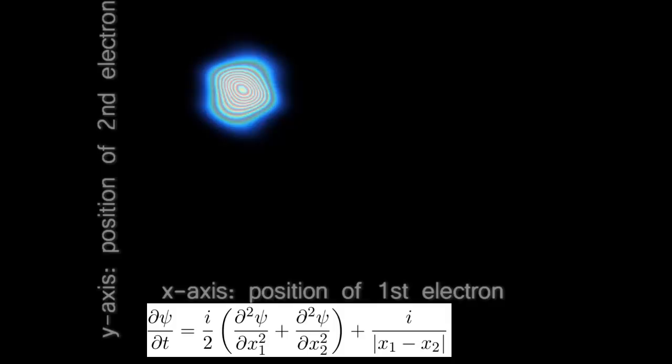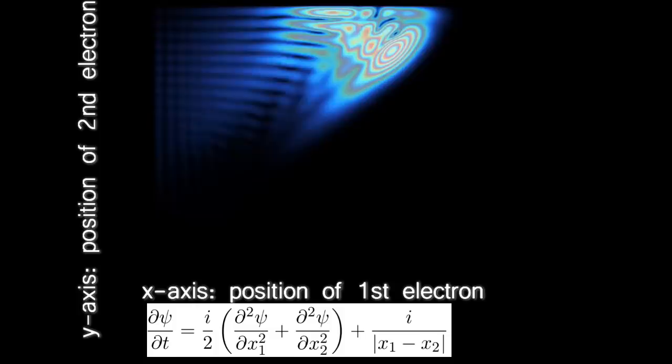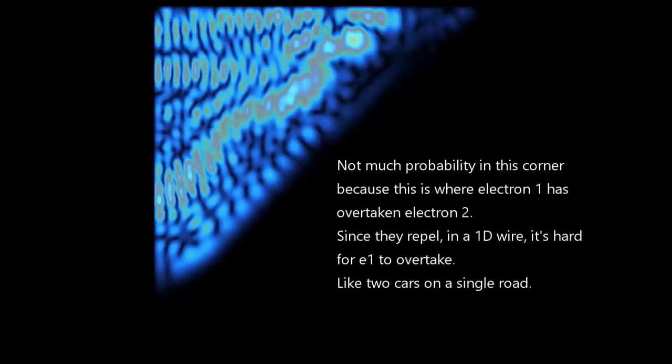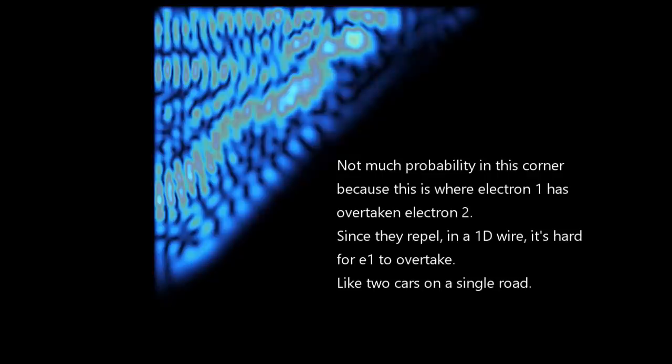Now we can write a Schrödinger equation for this situation too, and it looks like this. This equation, as before, tells us how the two electrons move, like this. Watch this a few times until you understand it. Try to make sure you understand why the wave function stays in the top-left corner. The reason, as for the classical situation, is that the two electrons can't easily pass by each other, because they repel each other. This is a one-dimensional system, so for the pair of electrons to end up in the bottom-right corner, one of the electrons would need to squeeze past the other. And although that isn't impossible in quantum mechanics, it's very unlikely, which is why the electron tends to stay in the top-left corner.